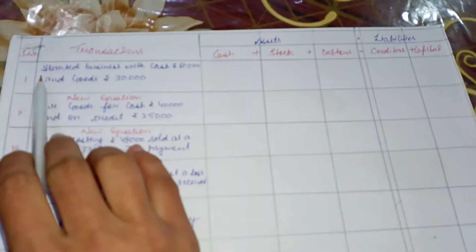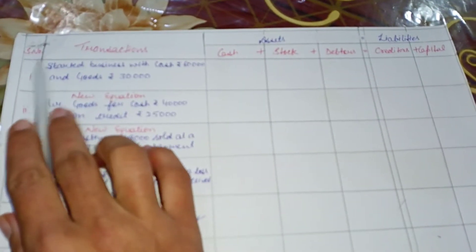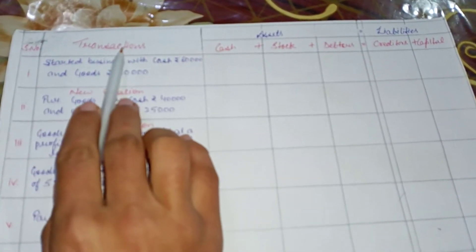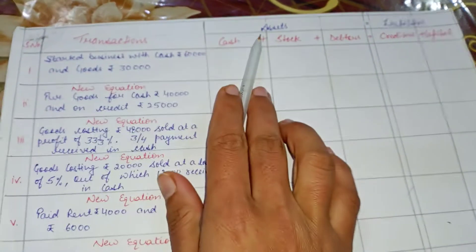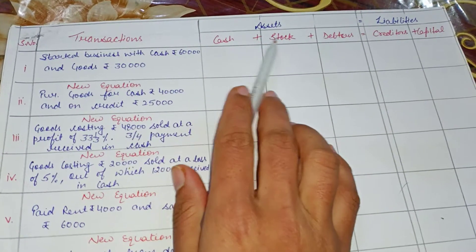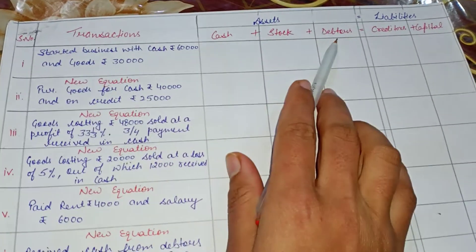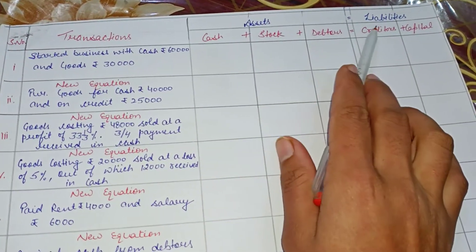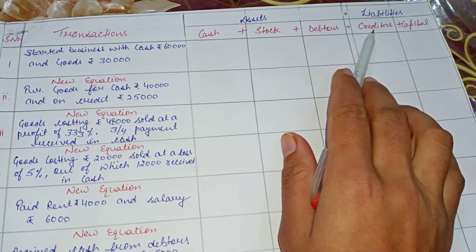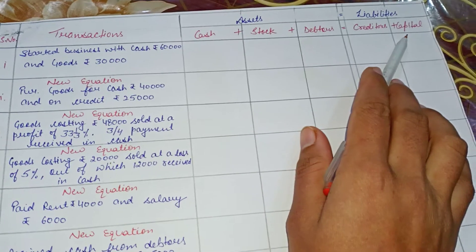Here we have the serial number, transactions, assets — cash, stock, debtors — and in liabilities, creditors and capital.